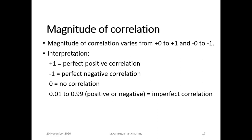The magnitude of correlation varies from zero to plus one (positive) and from zero to minus one (negative). The correlation coefficient value is interpreted accordingly — it is an imperfect correlation in most real-world cases.